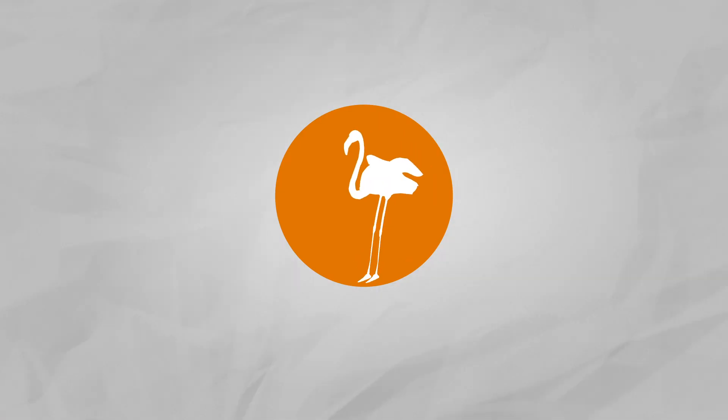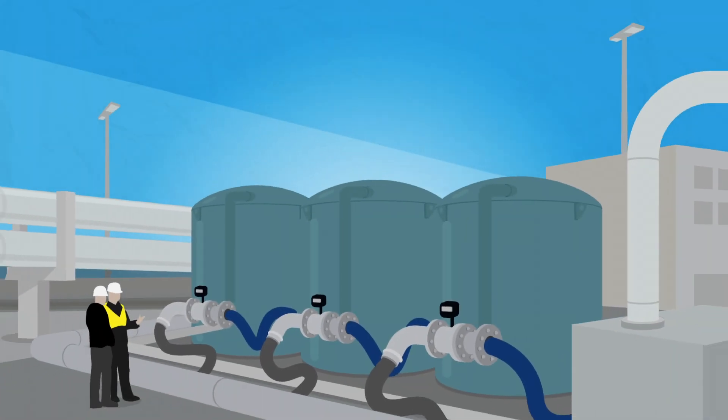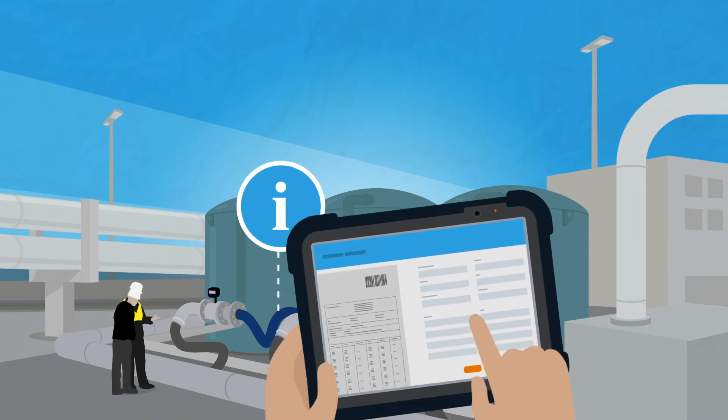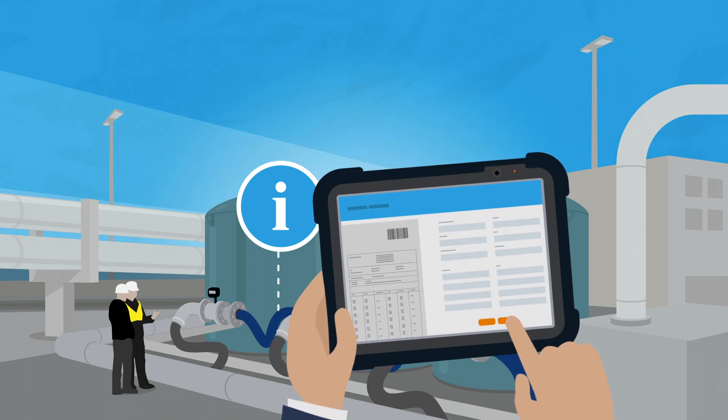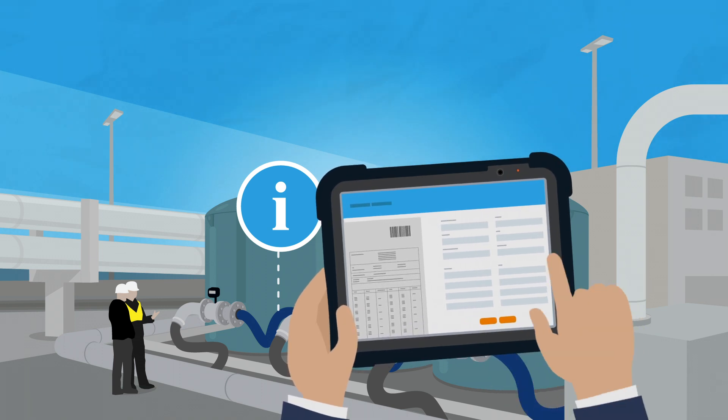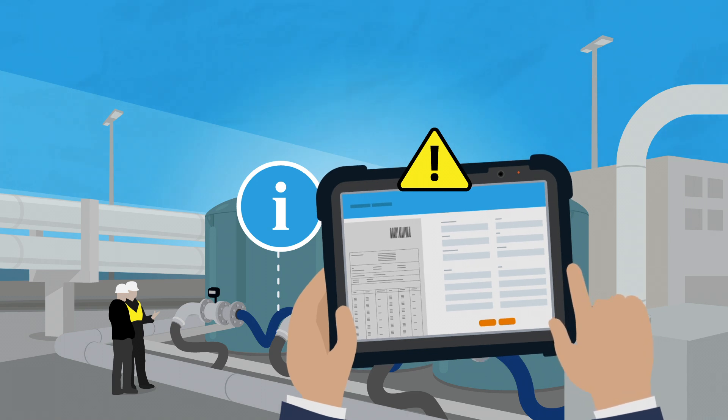Enter Flamingo. Flamingo uses technology to quickly give your staff insight into the use, history and condition of each hose at your location. This prevents using the wrong hose and signals for impending decay before it causes problems.